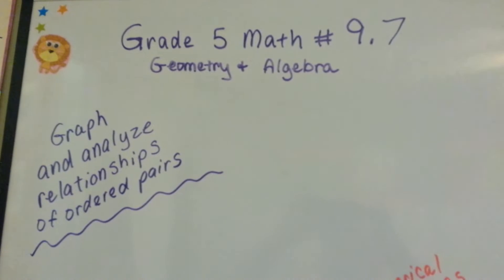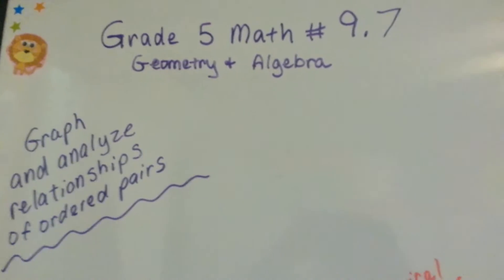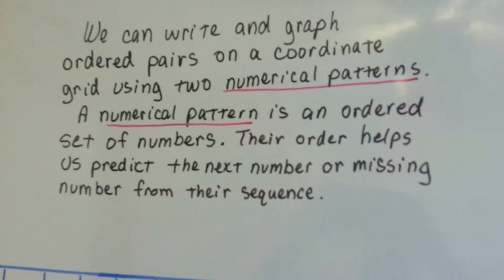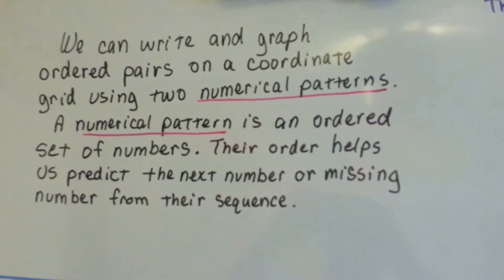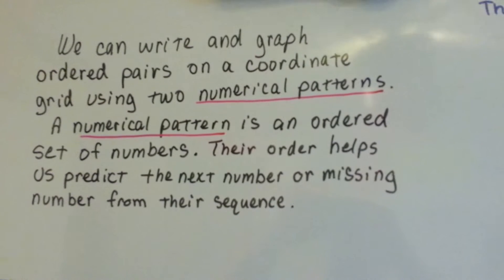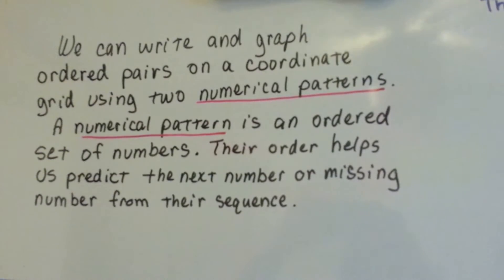Grade 5 math, number 9.7: Graph and analyze relationships of ordered pairs. We can write and graph ordered pairs on a coordinate grid using two numerical patterns. A numerical pattern is an ordered set of numbers. Their order helps us predict the next number or missing number from their sequence.